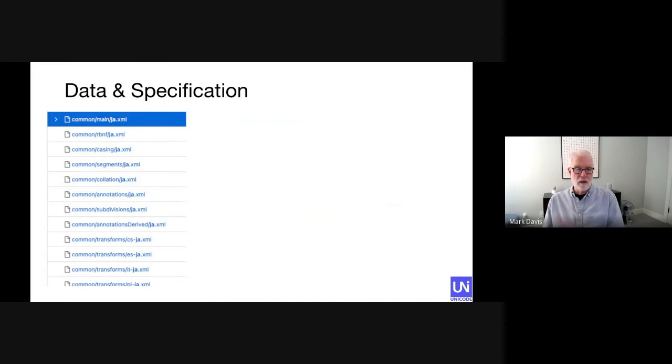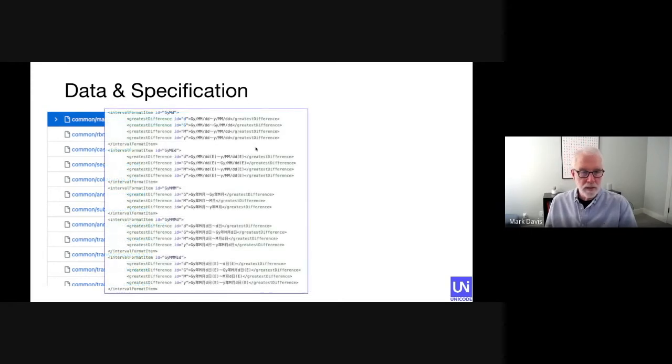So how does this all get delivered to products? Each of the languages have multiple files that contain different kinds of information. Here, we're looking at different files that are appropriate for Japanese. In those files, you'll find date ranges like the ones we just looked at. In this case, you'll see that in Japanese, a wavy tilde is used instead of a dash to separate a date range.